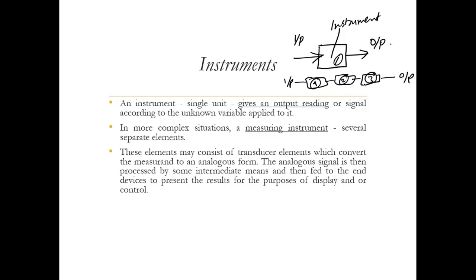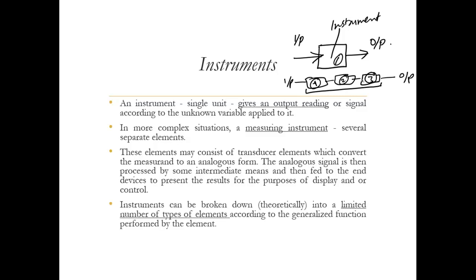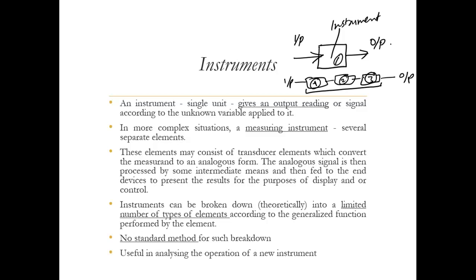All these together make an instrument or measurement system. Theoretically, we can break down instruments into a limited number of types of elements according to the type of function they perform. We have a couple of frameworks whereby we define or break down an instrument into different parts, which is important for designing or analyzing the operation of a new instrument.